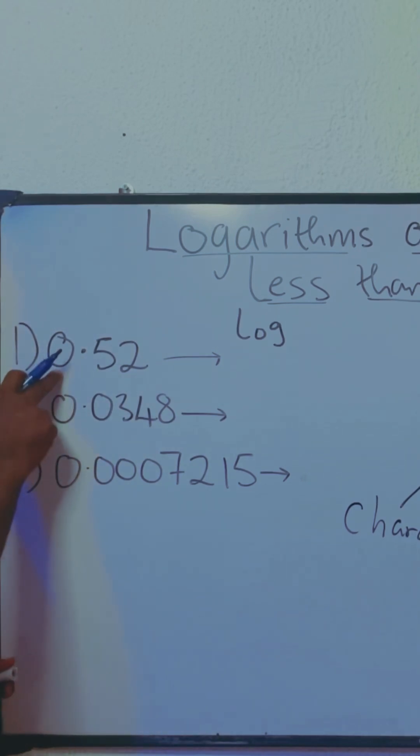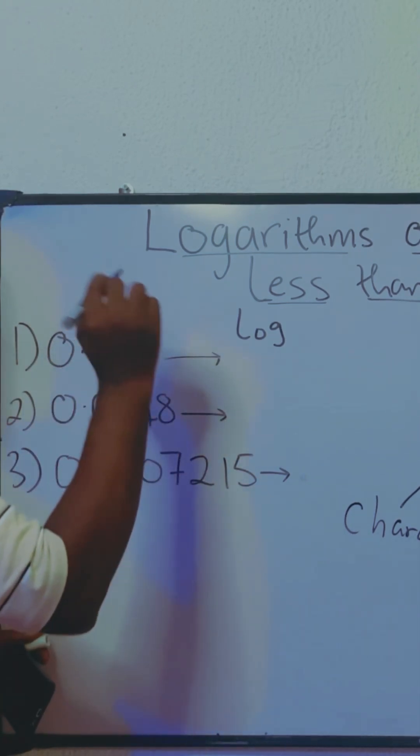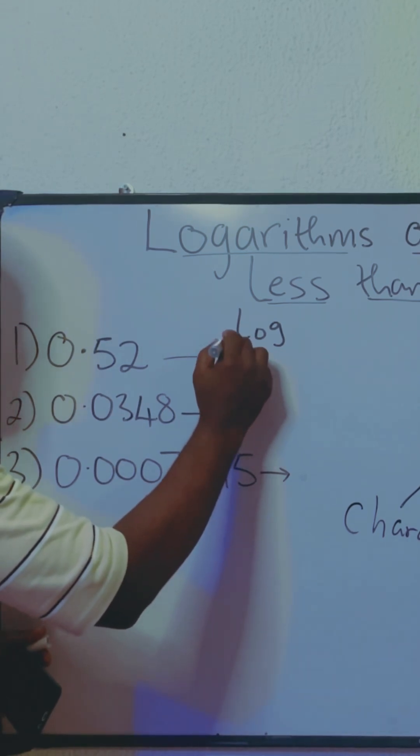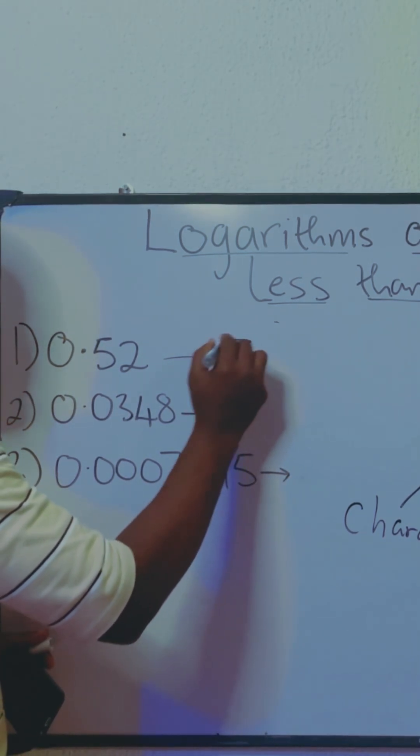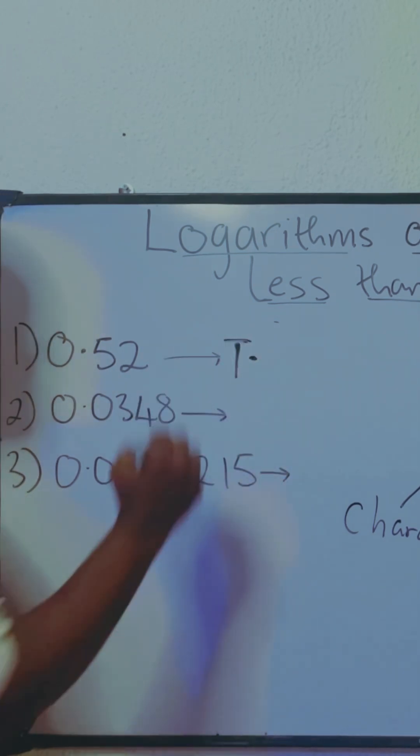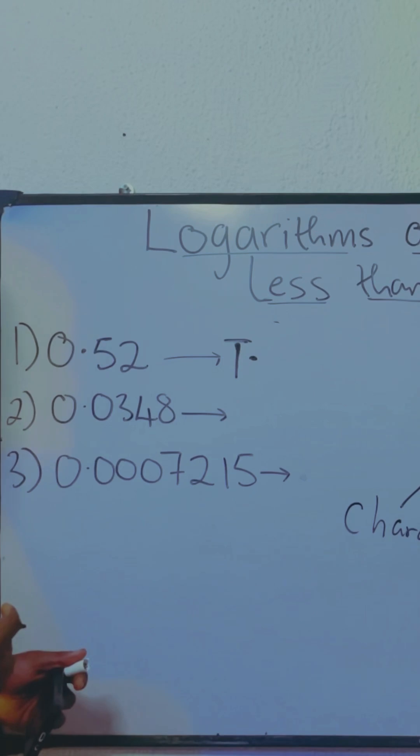So how many zeros can you find here? One. It means the logarithm of this number is going to start from bar one, that is minus one point, whatever is going to now be in the fractional part or the mantissa.